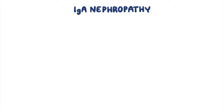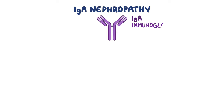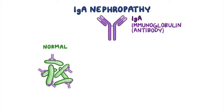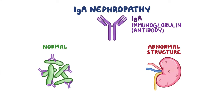IgA nephropathy is caused by an abnormal form of IgA, a type of immunoglobulin, also called an antibody. Normally, this is a type of protein that helps the body fight against bacteria and other foreign organisms. When the IgA has an abnormal structure, it can accumulate in the kidneys, causing inflammation and damage.